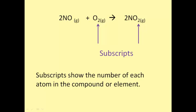Subscripts show the number of each atom in the compound or element. For example, this subscript tells us that there are 2 atoms of oxygen in an oxygen molecule. And this one tells us that there are 2 oxygen atoms in a nitrogen dioxide molecule. There is no 1 written here, but it's understood. That means in each molecule of nitrogen dioxide, there is 1 nitrogen. Similarly, in nitrogen monoxide, there is 1 nitrogen and 1 oxygen. The ones are never written but always understood.